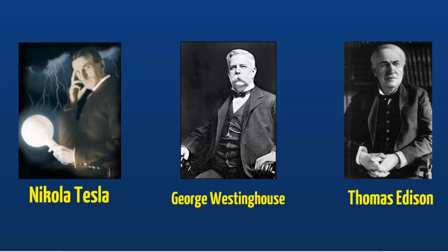Tesla tried to convince Edison to back his plans for an AC motor, but Edison was not interested in alternating current and had much invested in the building of direct current power plants of the time. However, Edison was impressed with Tesla and offered him a job to improve the efficiency of his direct current technologies. Tesla stated that Edison promised him $50,000 — about $1.1 million in today's money — for his work. In just three months, Tesla had accomplished Edison's request. When he asked Edison for his money, Edison replied, "When you become a full-fledged American, you will appreciate an American joke." Enraged by this, Tesla quit Edison's employ and started supporting himself as a ditch digger for a short time.